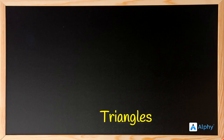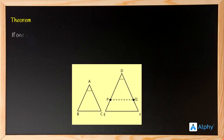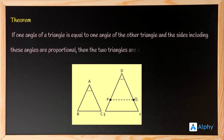Hello everyone. In this video we'll be discussing a theorem which is based on triangles. The theorem states: if one angle of a triangle is equal to one angle of the other triangle and the sides including these angles are proportional, then the two triangles are similar.